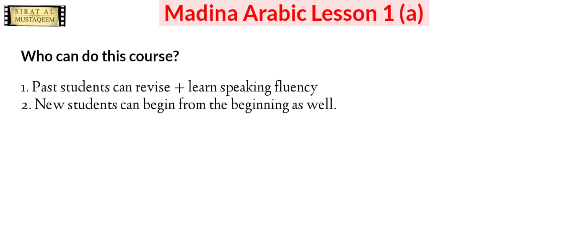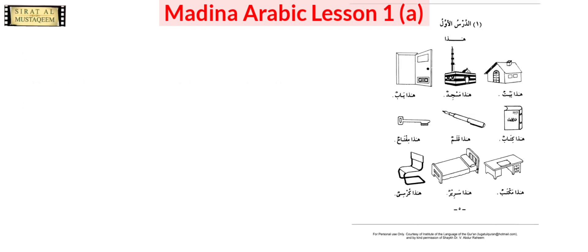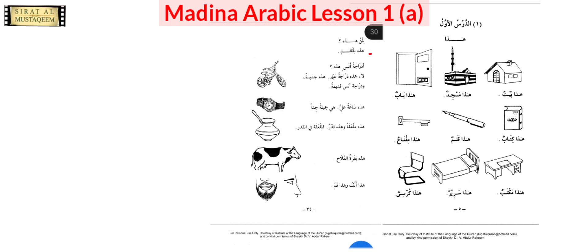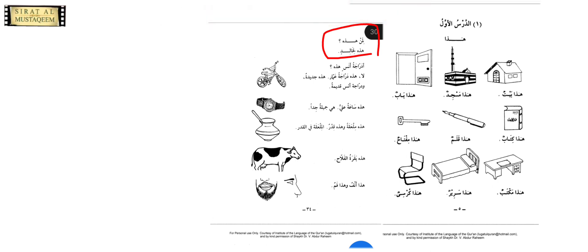For whom is this lesson? This is lesson one — everything restarted, so either you can revise or you can start from the beginning. If you just know alif ba ta sa and you know how to read Arabic, this course is for you. Now, ad-darsul awwal — let's first have a look at what this is. You see here 'haza baitun,' 'haza masjidun' — this is a house, this is a masjid.